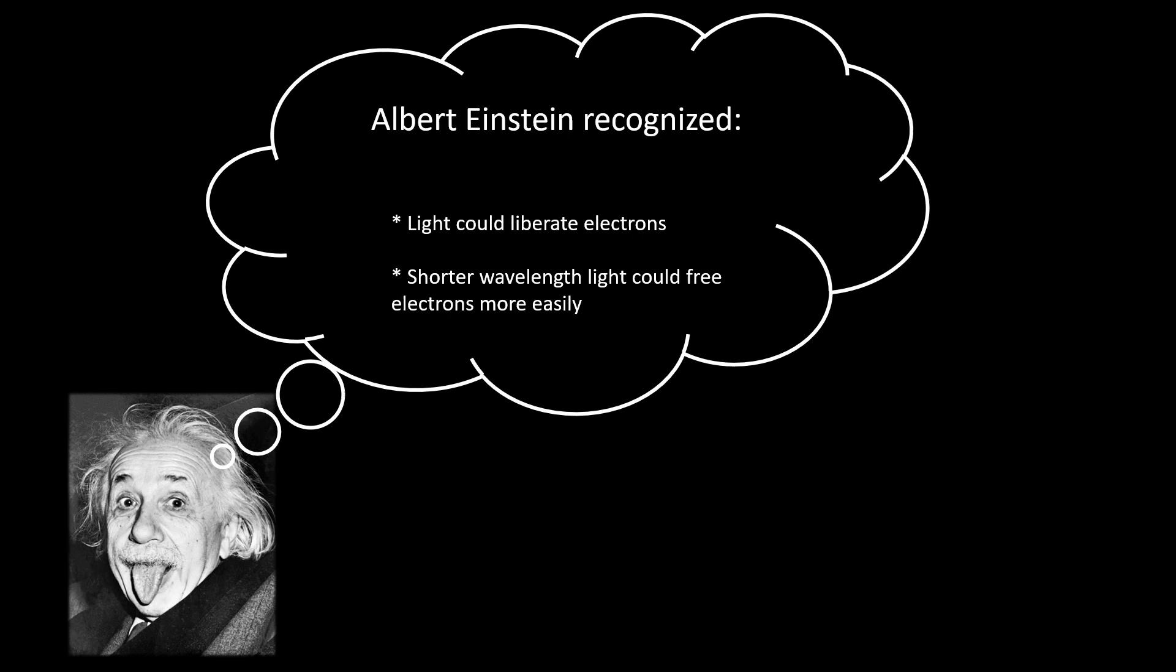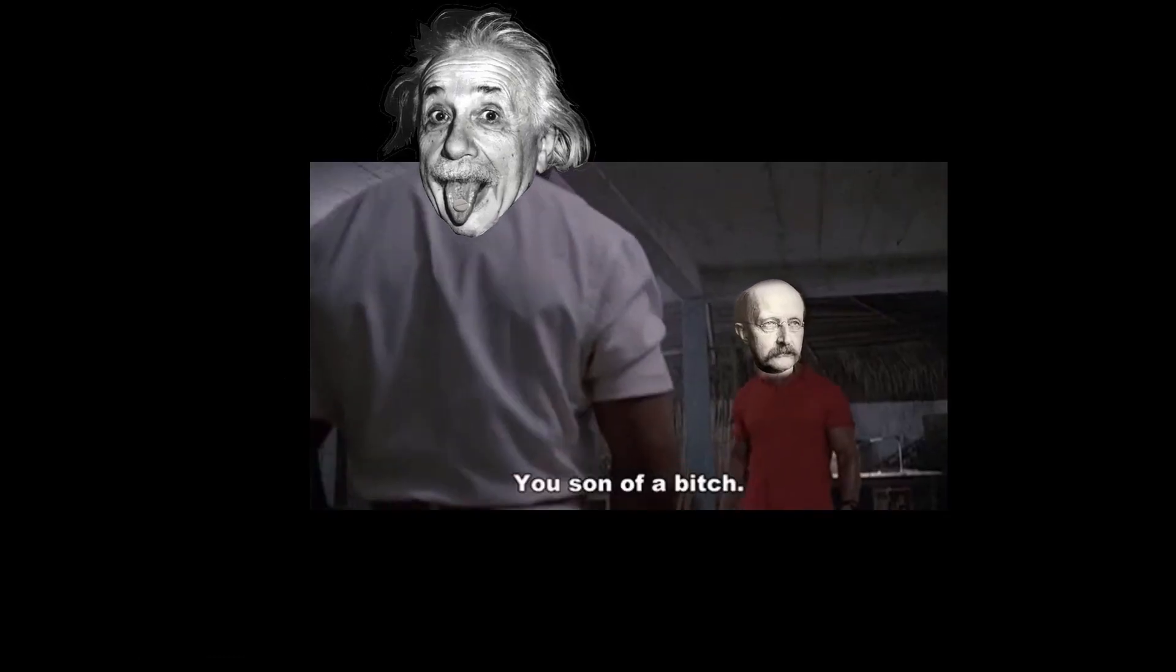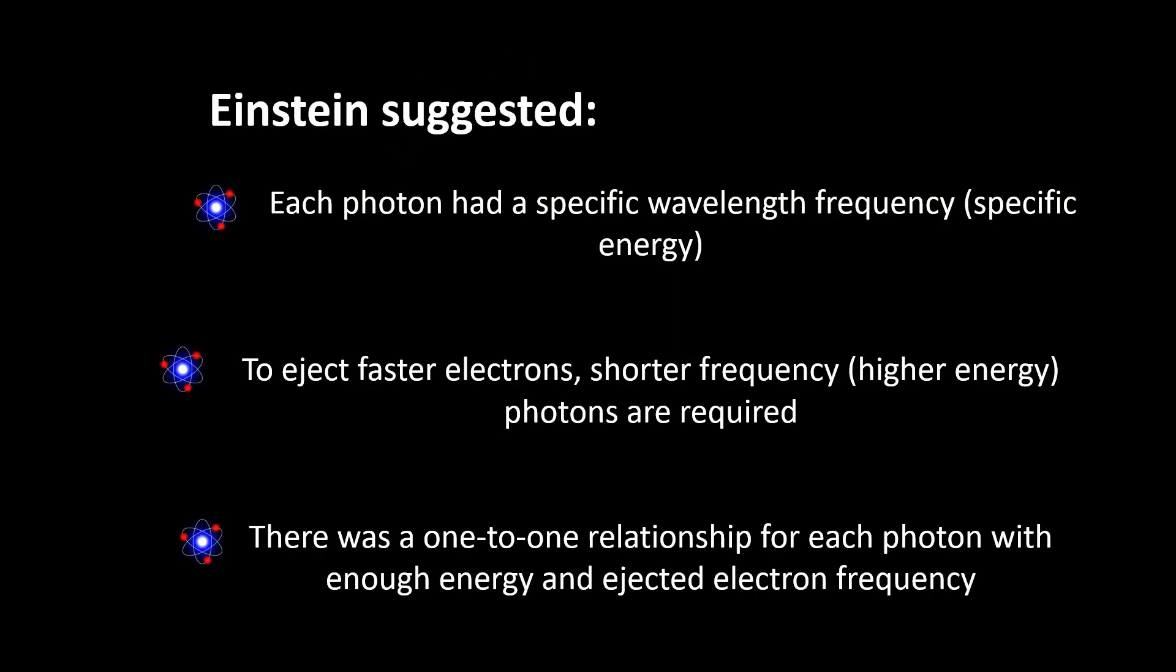Einstein recognized that shining light on a metal could liberate electrons. He also knew that shorter wavelength light like UV could free electrons more easily compared to longer wavelength light such as IR or red light. So, drawing from Max Planck's notion of light as discrete packets of energy called photons, Einstein suggested that each photon carried a specific wavelength frequency and hence a specific energy. This energy played a pivotal role in releasing electrons.